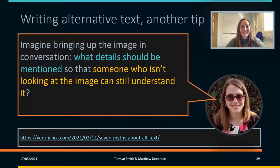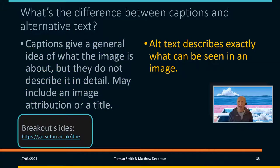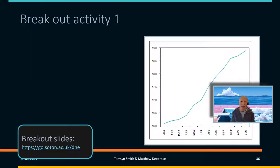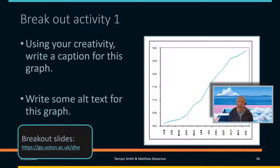Another tip about writing alt text is thinking about the details you need to mention for someone who isn't looking at it. What is the purpose of the image? What details are important? We're going to look at a graph and talk about captions versus alternative text. A caption gives a general idea about what the image is about but doesn't describe it in detail, and might include an attribution or title. Whereas the alternative text describes exactly what can be seen in the image that's relevant. In our activity, we'll ask you to come up with a caption and write some alternate text for the graph.